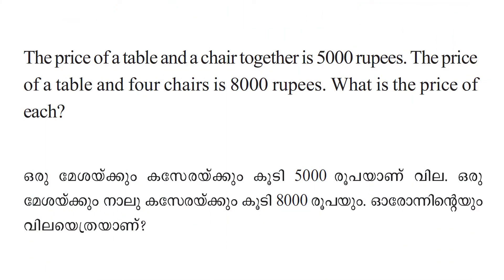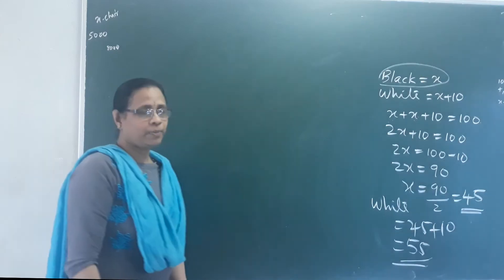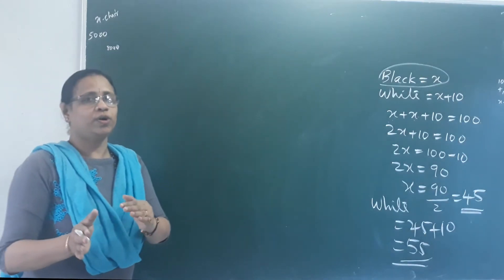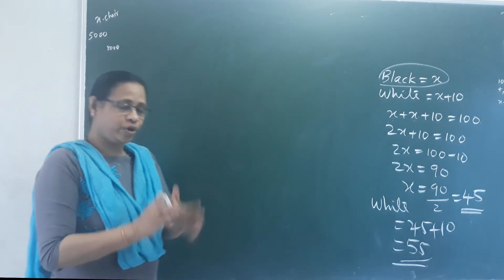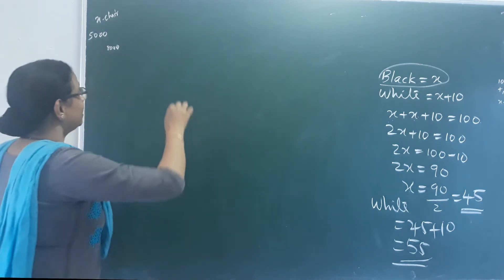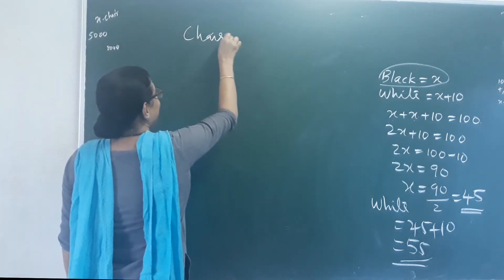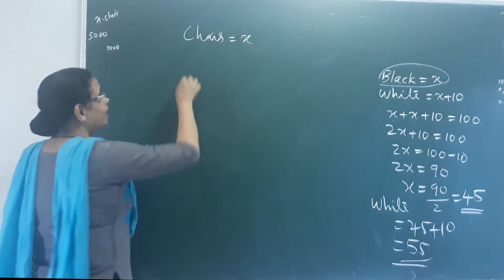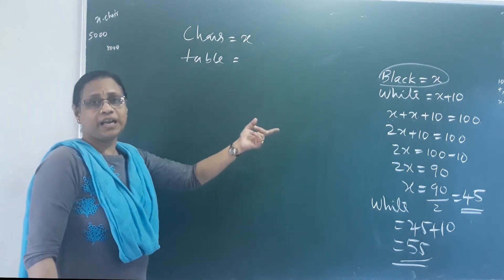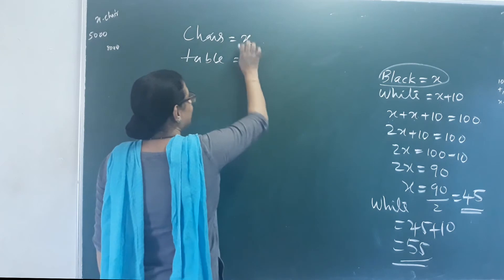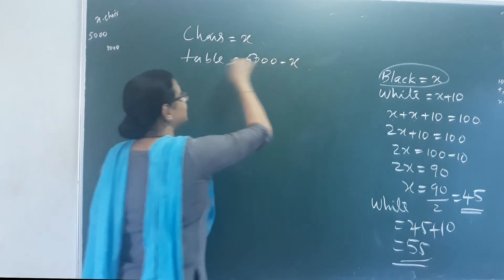The price of a table and a chair together is 5,000 rupees. The price of a table and 4 chairs is 8,000 rupees. What is the price of each? I will take the chair as X. If you have a table, the price of the table is 5,000 minus X.